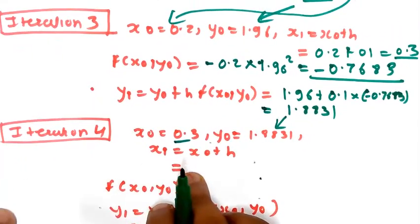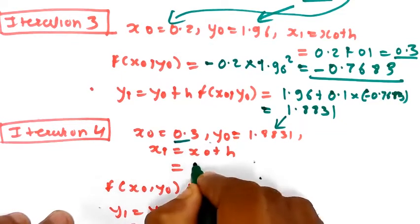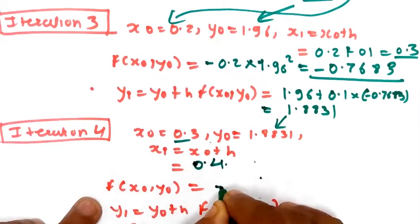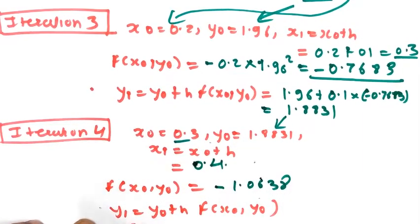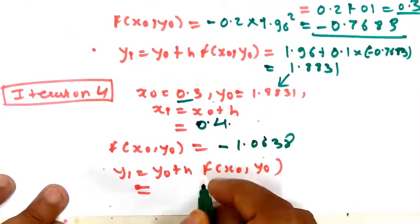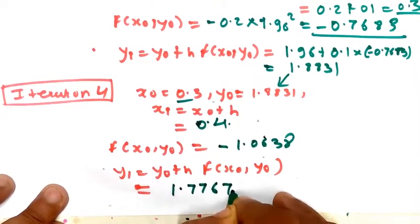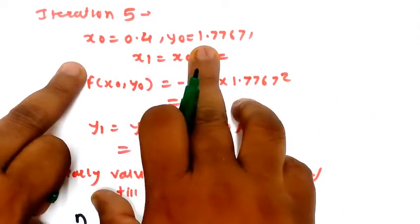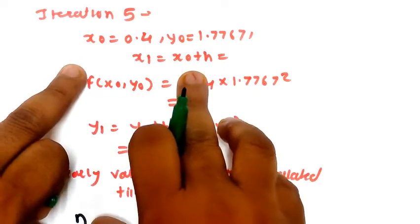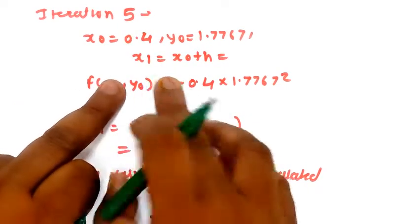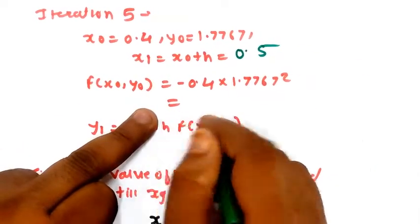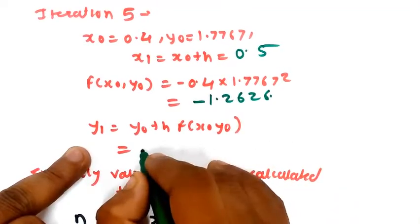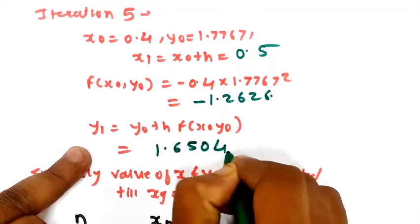For iteration 4, x₁ = 0.4. The function value is -1.0638 and putting the value into the equation gives y = 1.7767. Following the same steps for iteration 5: x₁ = 0.5, the function value is -1.2626, and the resulting y = 1.6504.